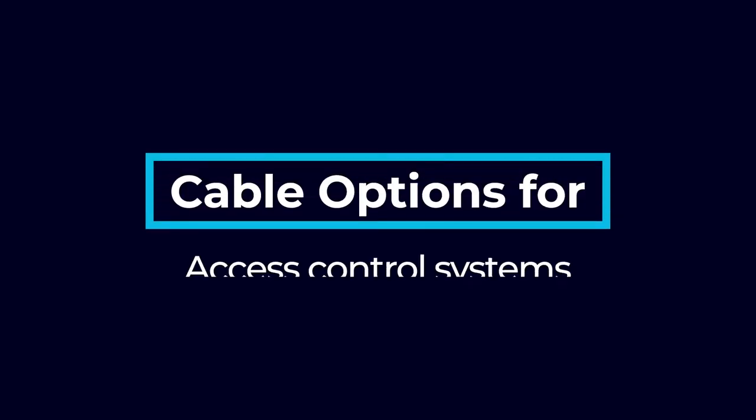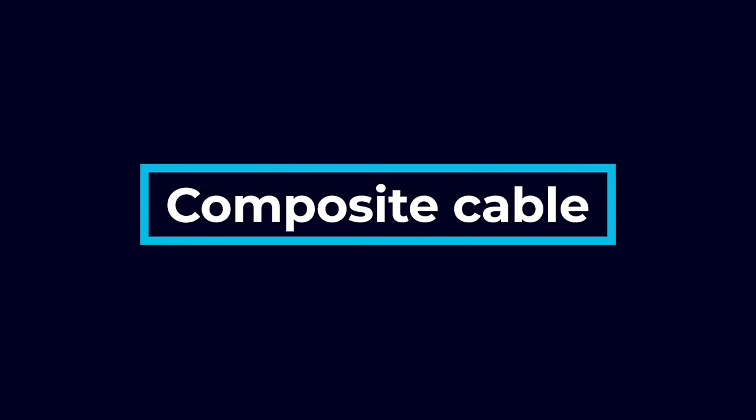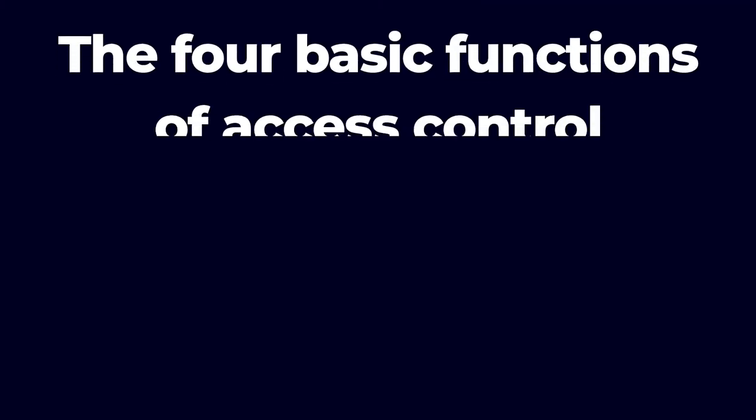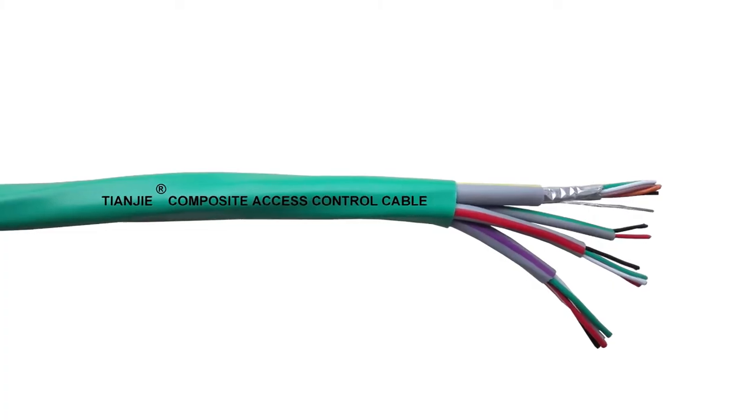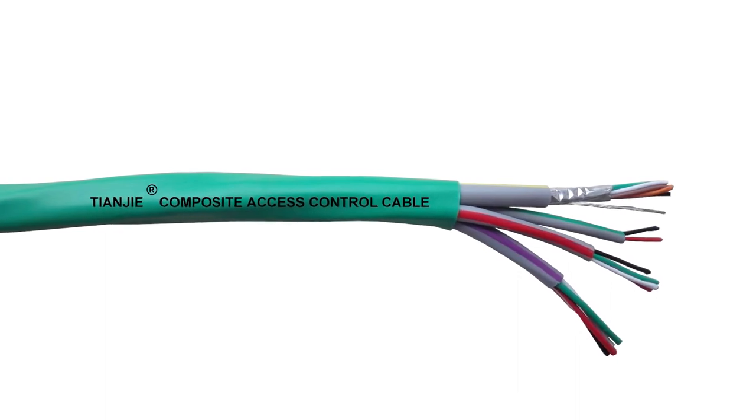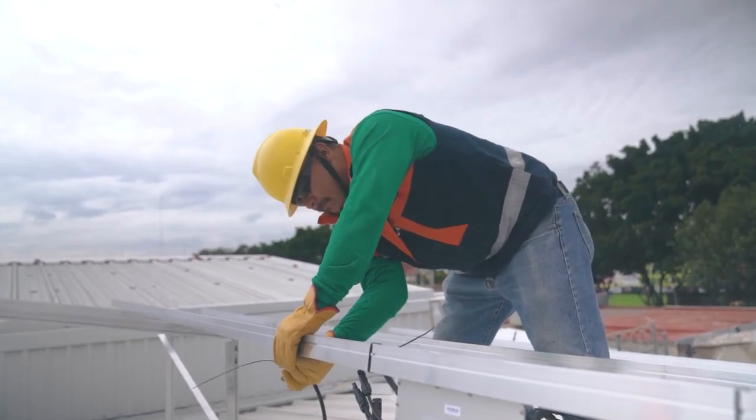Just like with your surveillance system, there are several types of cable options for access control systems. The first type of access control cable — and one that really does it all — is the composite cable. Composite cables combine four basic functions of access control: power, card reader, door contact, and request to exit, into one simple cable. Composite cables usually consist of four separate cables combined and twisted into one insulated cord, making installation, maintenance, and operation easy, as there is no need to run separate wires throughout the wall.